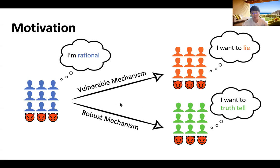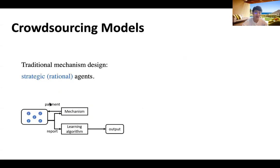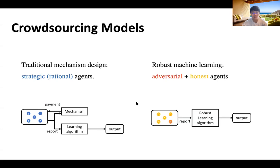So the question is how to design robust mechanisms while dealing with rowdy crowds consisting of both rational agents and adversarial agents. On one hand, traditional mechanism design can handle strategic, or rational, agents by designing truthful mechanisms to incentivize them to tell the truth. On the other hand, robust learning can deal with a fraction of adversarial agents while assuming the rest are honest, outputting something robust against adversarial attack.